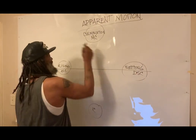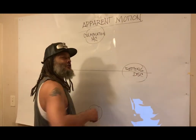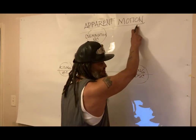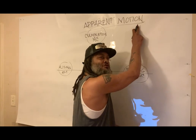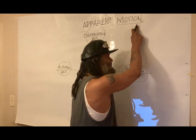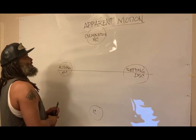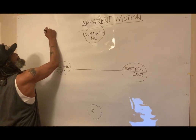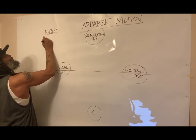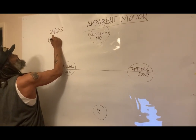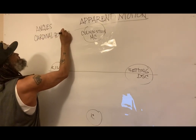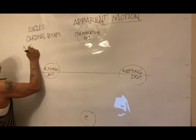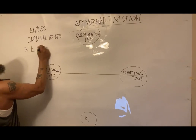The fact that they were using apparent motion is what I'm stressing here. These four points on the chart are called the angles — the cardinal points. They deal with directions: north, east, south, and west.